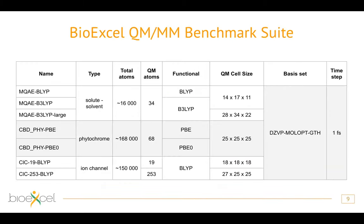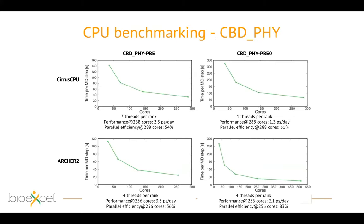Looking at the CBD-phi system with slightly more QM atoms embedded in a much larger overall system of 168,000 atoms, we compare the GGA functional PBE against its hybrid equivalent PBE0. We see roughly similar behavior to the BLYP vs B3LYP comparison. The hybrid is a bit more costly, but parallel efficiency looks slightly better at the scales examined, with performance in picoseconds per day on both systems trending similarly.